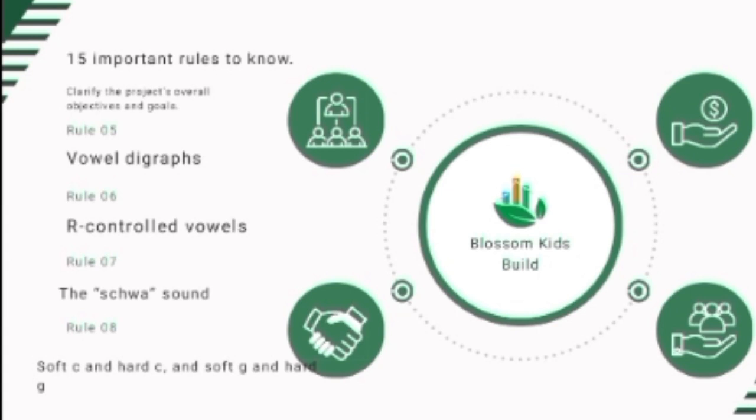Rule number seven: the schwa sound. Any vowel can make the schwa sound — it sounds like a weak 'uh.' Words like 'from' and 'final' have the schwa sound. Some words have more than one schwa sound, like 'apartment' and 'banana.' The schwa is the most common sound in the English language.